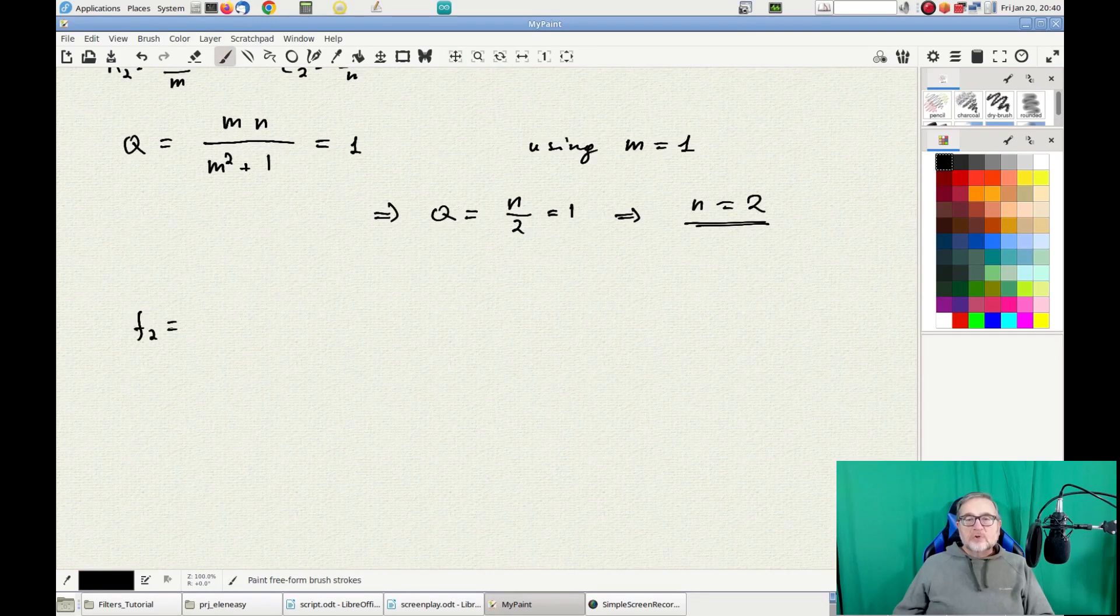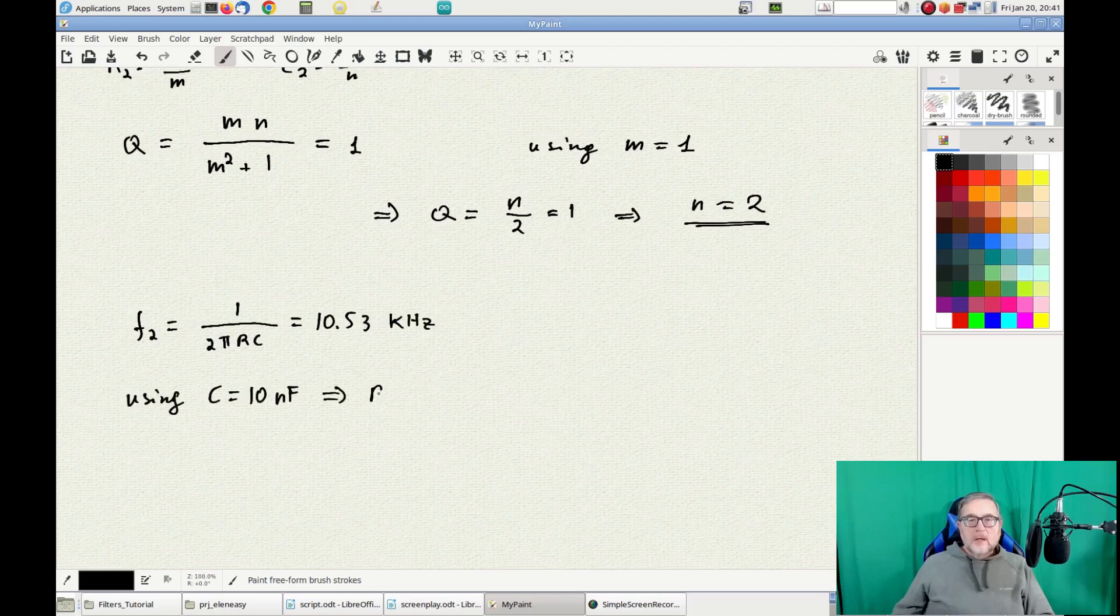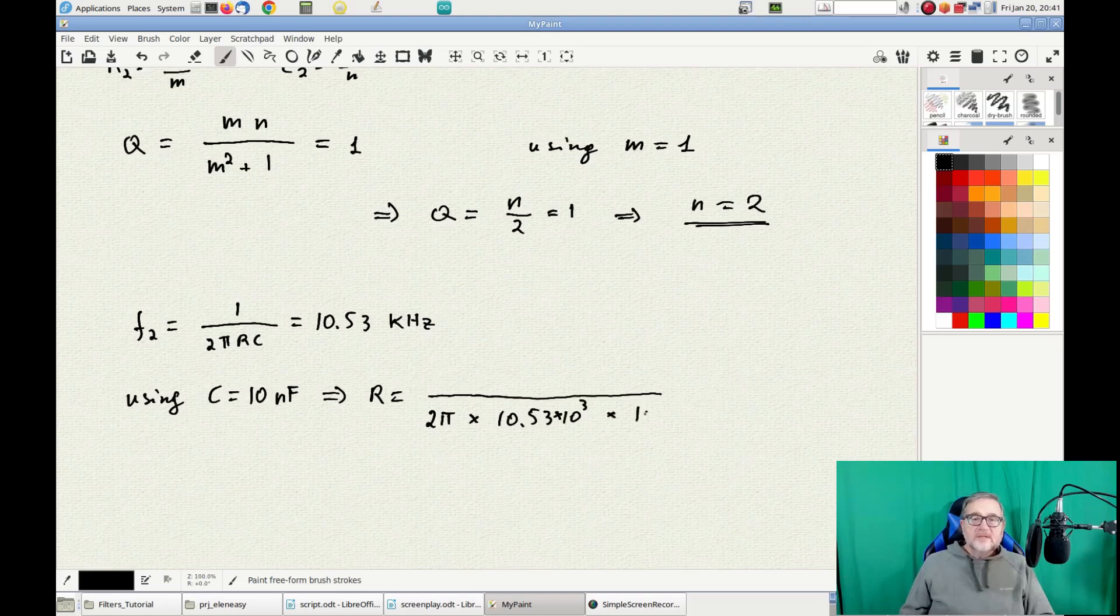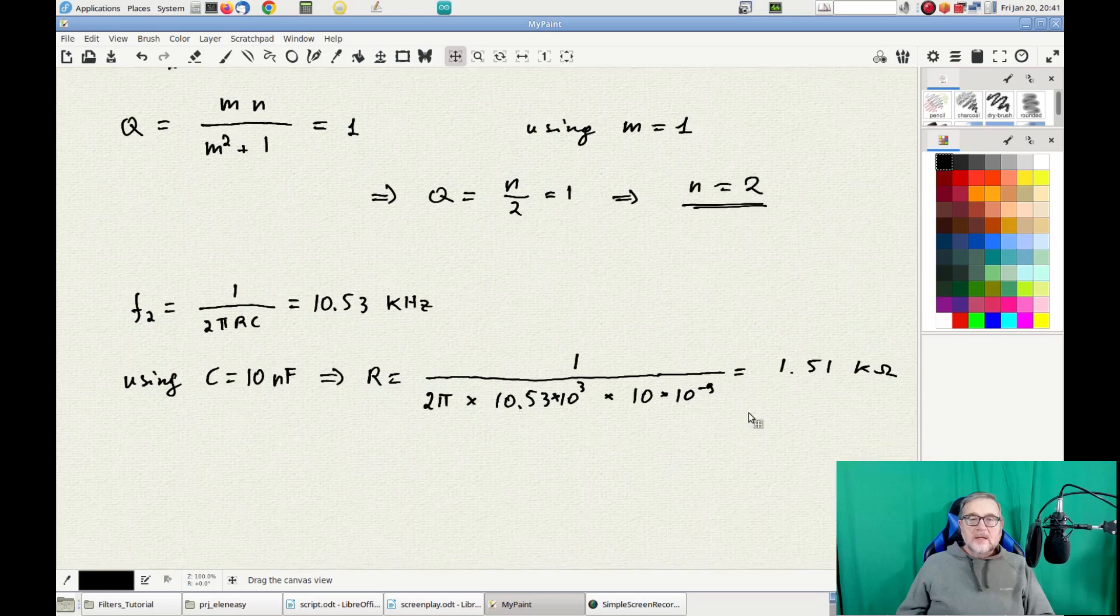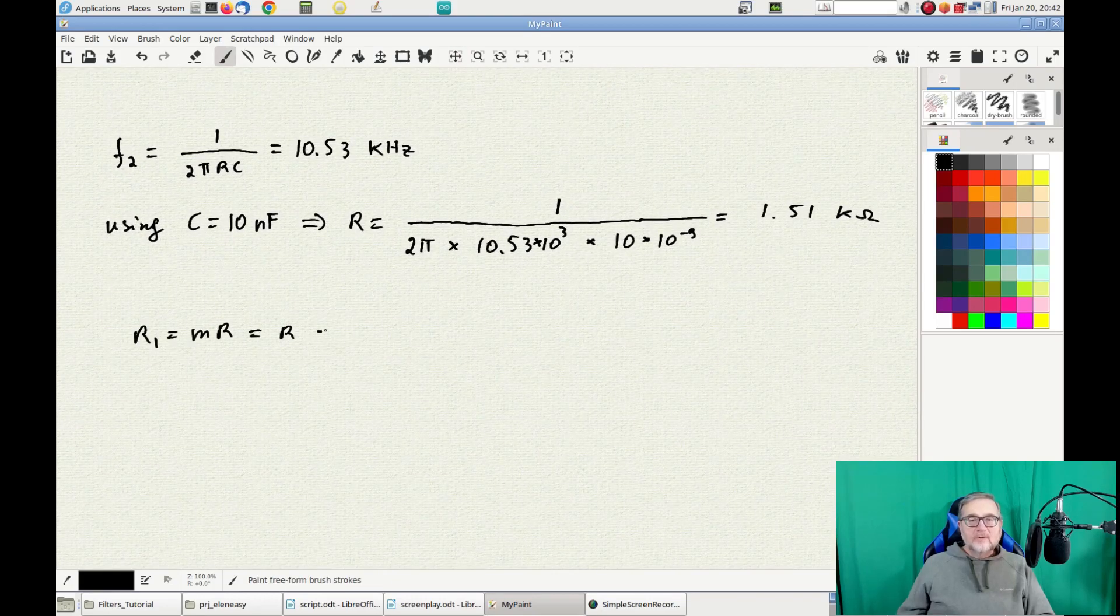From the definition of the cutoff frequency, we can now work on the generalized RNC. So, using a capacitor of 10 nF, we obtain a resistor of 1.51 kΩ. And now we can calculate the actual value of the components.